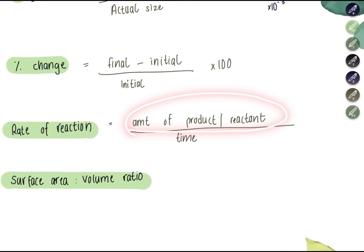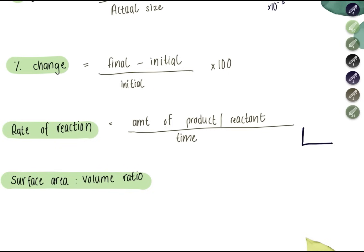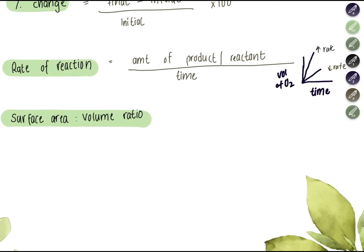Rate of reaction is the amount of product or reactant used or produced per unit time. For example, if you're calculating the rate for volume of oxygen produced, a higher value means the rate of reaction is high and a lot of oxygen is produced in a short time. On a graph, if the x-axis is time in seconds and the y-axis is volume of oxygen, a steep line means a higher rate; a less steep line means a lower rate.